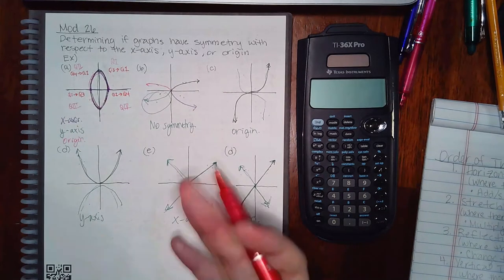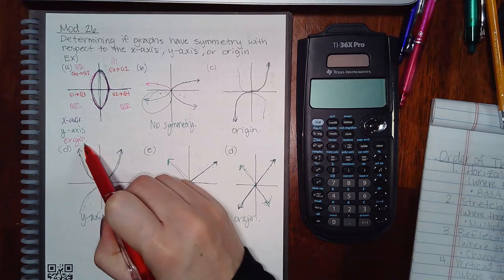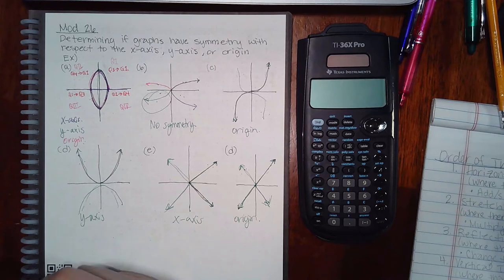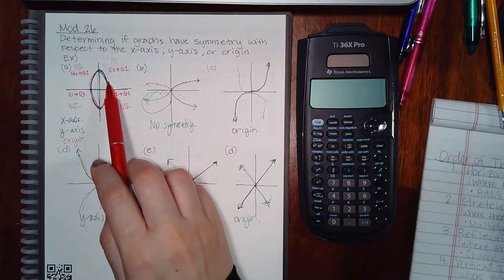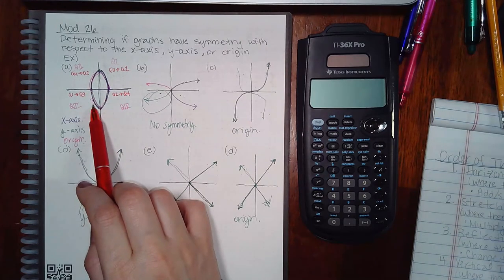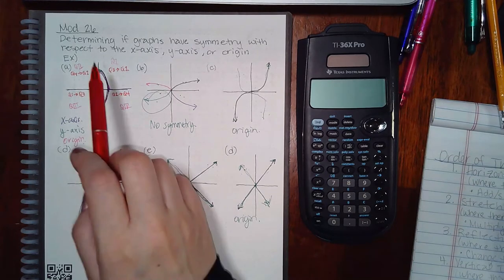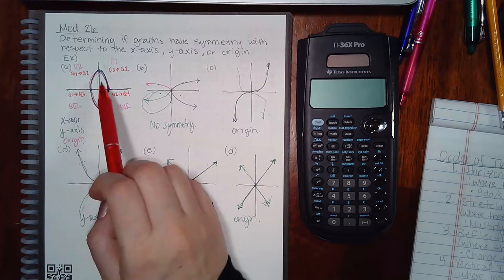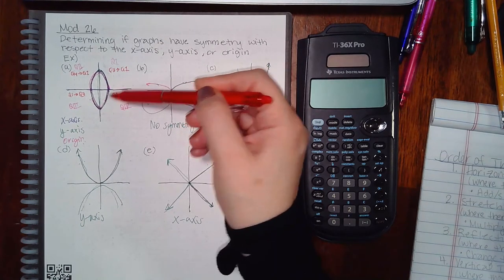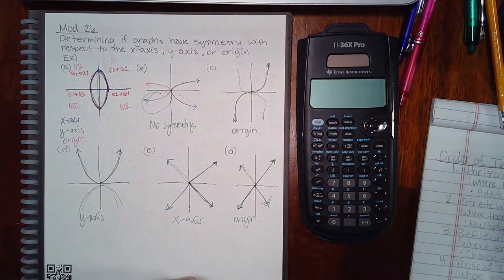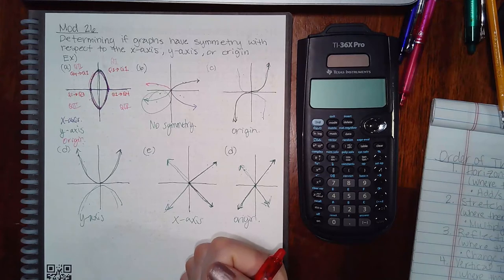It does land on itself, therefore it does have symmetry with respect to the origin. One thing to note: when flipping over the arcs in each quadrant, I was always flipping over the y-axis first and then the x-axis. However, I don't necessarily have to flip over the y first and then the x. I could flip the arc over the x-axis first, then the y-axis, and still land in the same position. The order doesn't matter, as long as you flip over both axes.